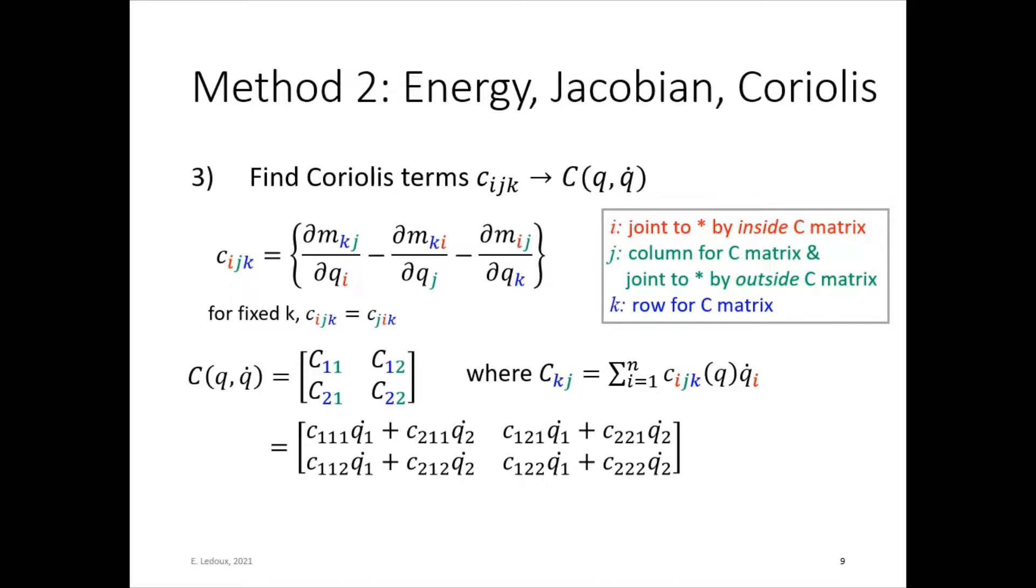So next, find the Coriolis terms. This is the trickiest part. So C_{ijk} goes inside of the Coriolis matrix. So here are the capital C's. You can see the first subscript represents the row and the second subscript represents the column. And those entries are the summation of all of the C_{ijk}'s of a joint times that joint's velocity.